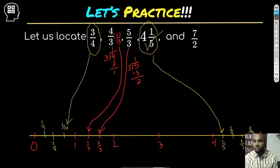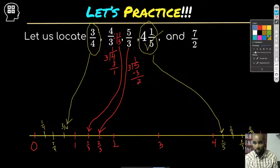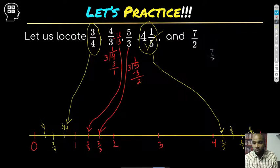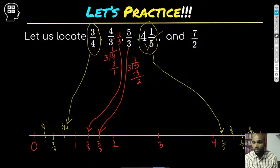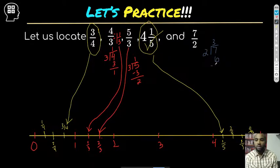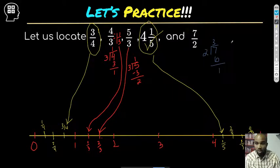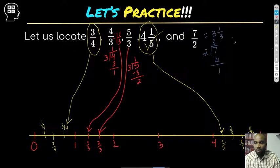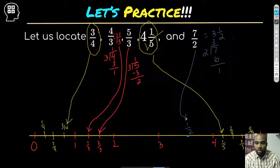Our last one is seven over two. Seven divided by two: two goes into seven three times, giving six, remainder one. That leaves us with three and one half. One half is just right in the middle of the space between three and four, so I draw my arrow and done.